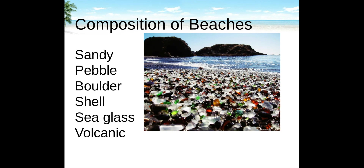Sea glass is another substance that covers some of Earth's beaches. Sea glass forms after broken glass is disposed of in the sea and acted upon by erosion, which over time smooths its sharp edges to result in a piece of glass with smooth, softened, rounded surfaces.